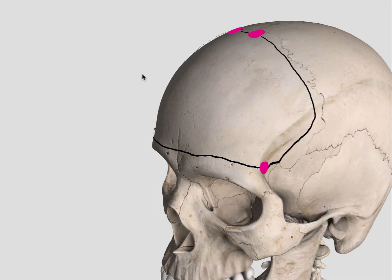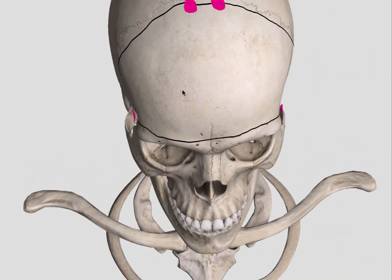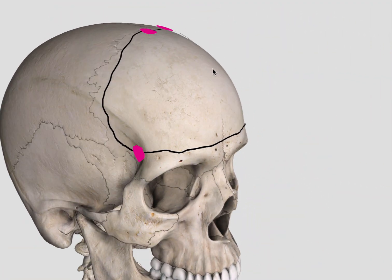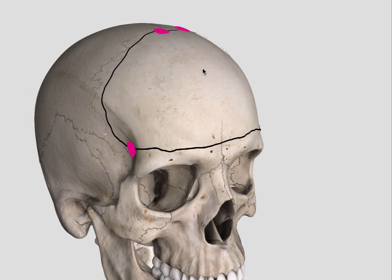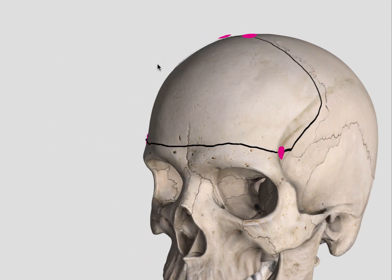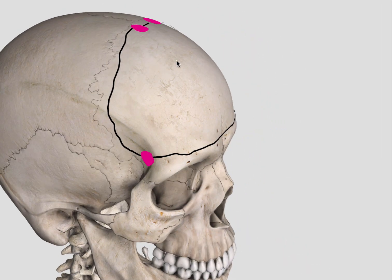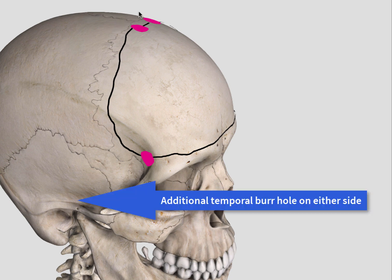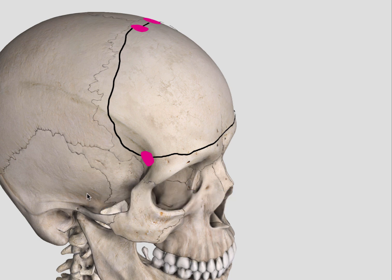So in terms of bifrontal, this is how I would do it. If I'm doing a bifrontal temporal craniotomy, then I will probably put the burr holes just behind the coronal suture, then I can come this way and connect it up.